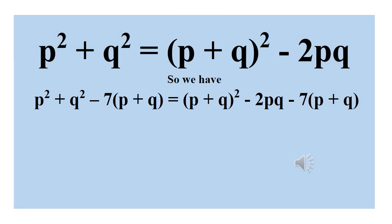It then follows that we can plug in p plus q squared minus 2pq in place of p squared plus q squared. So where we had p squared plus q squared, we replace it with p plus q squared minus 2pq, then minus 7 into bracket p plus q.